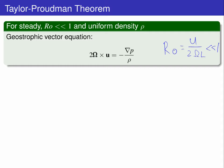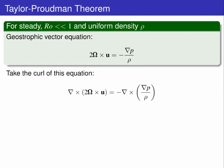Put the horizontal components of the geostrophic approximation into vector form, giving 2 omega cross u equals grad of pressure divided by density. Now we take the curl of this equation.